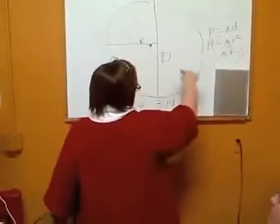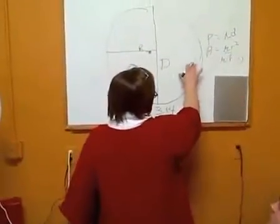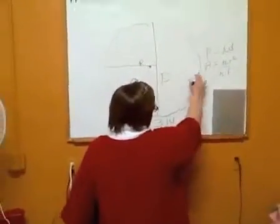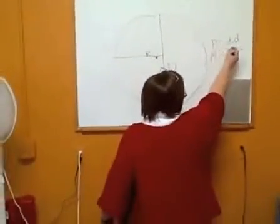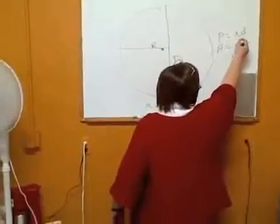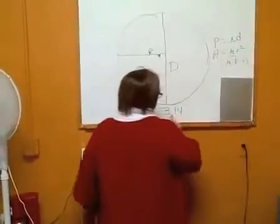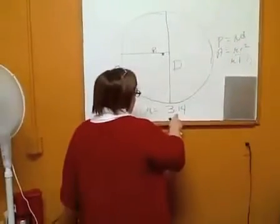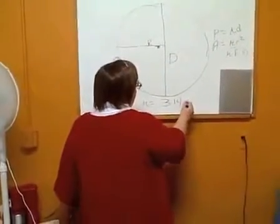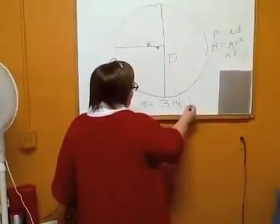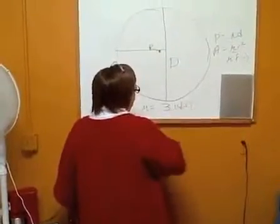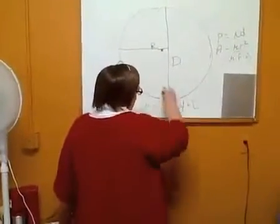Looking for the diameter — it's actually the perimeter — and the perimeter, the formula for it is pi d, or 3.14 times whatever diameter they give you.